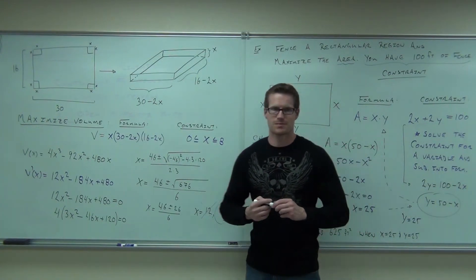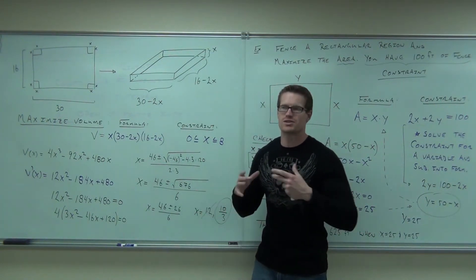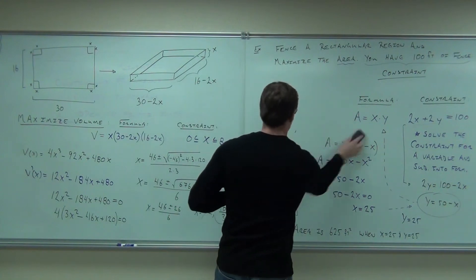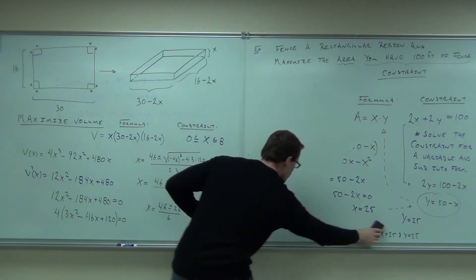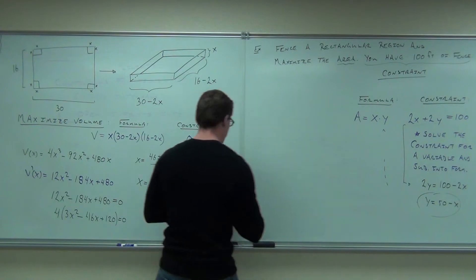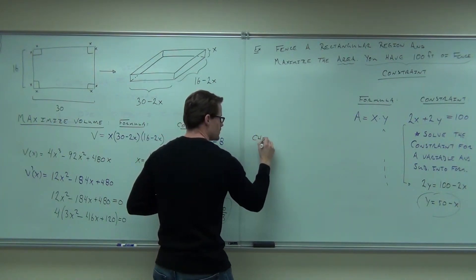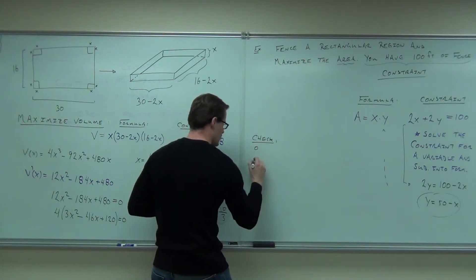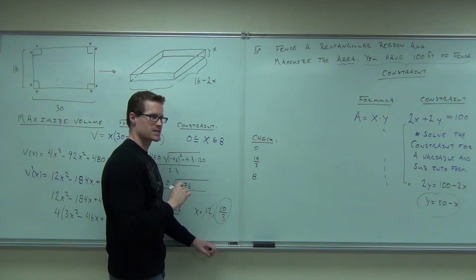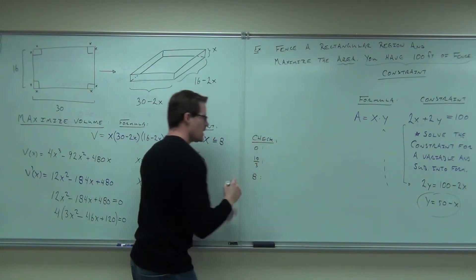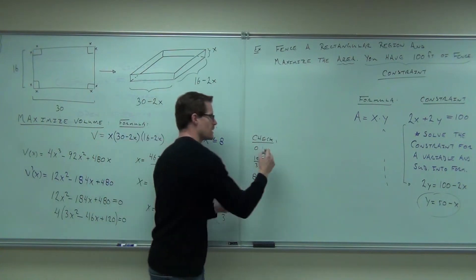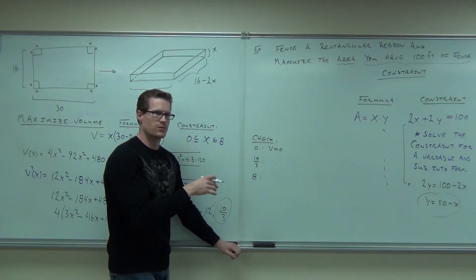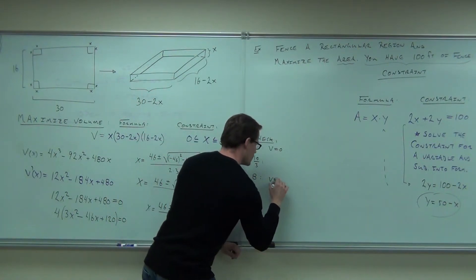The only one it could possibly be is 10 thirds. So let's think about this. Now, realistically, we already said, and you can check it. You can check your endpoints. In fact, I'll erase this. I'll do it over here. Your endpoints are 0 and 8, and the only critical number you had was 10 thirds. If you make 0 as your x cut, you're going to get a volume of 0. If you make 8 as your x cut, you're going to get a volume of 0.